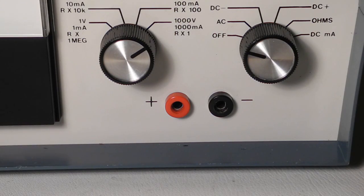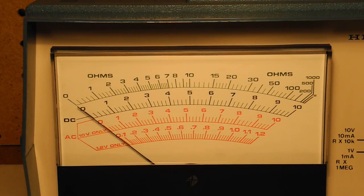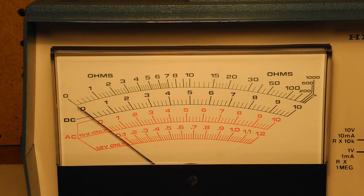Banana jacks are provided which mate with the included red and black test leads. Measurements are read off of the meter. Note that the AC 1 and 10 volt scales are separate from the other ones. This is because the rectifier in the circuit is not quite linear at low voltages and introduces some error. The 1 volt range on AC actually goes to 1.2 volts.